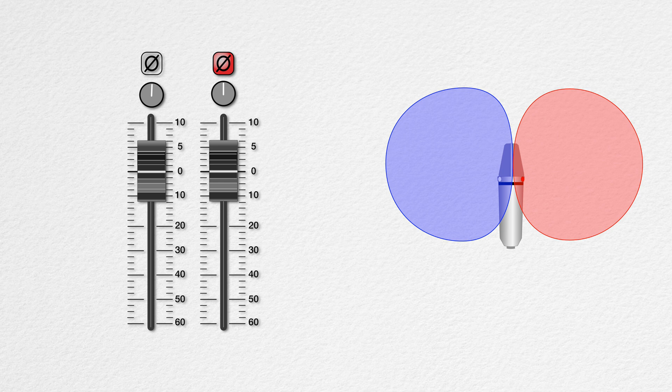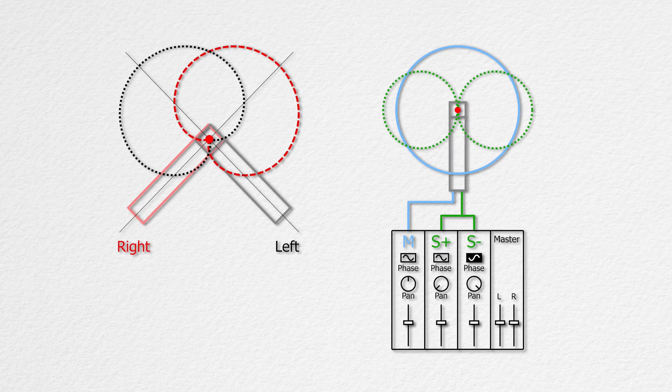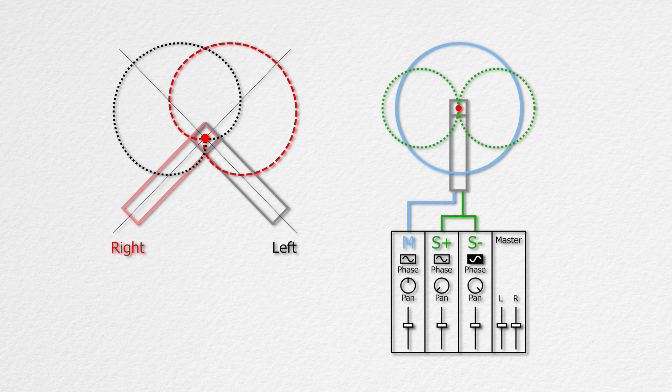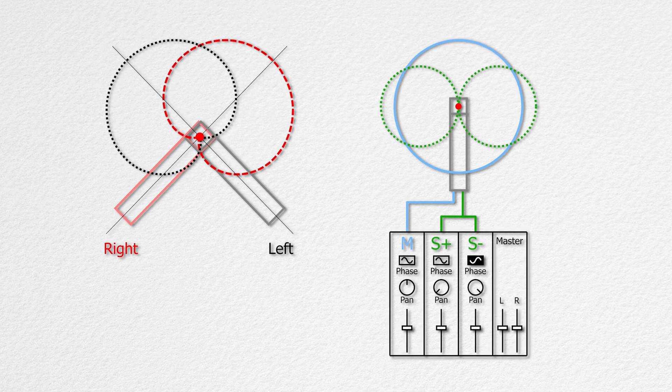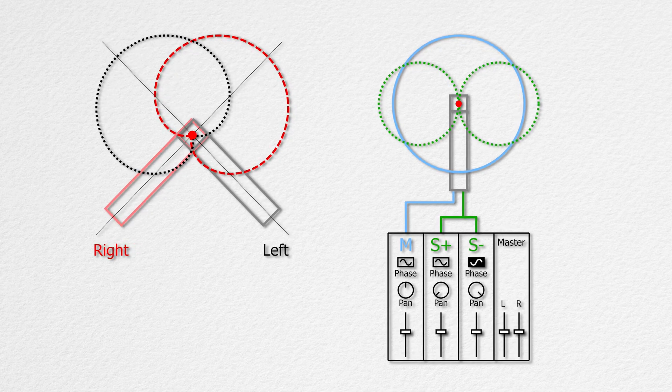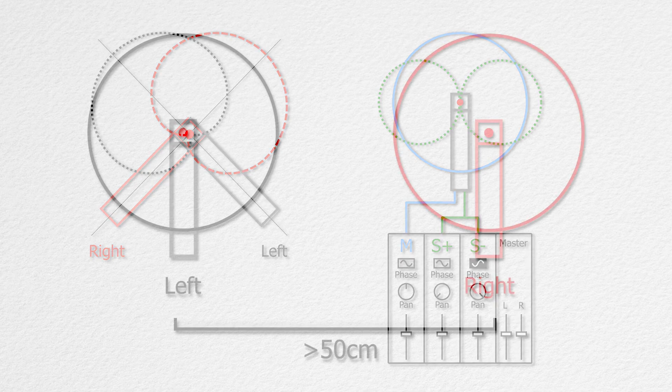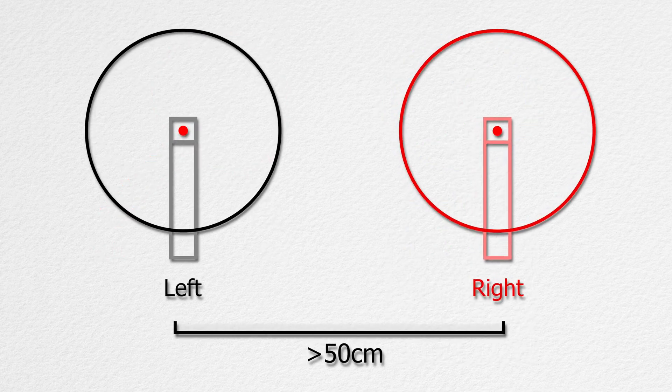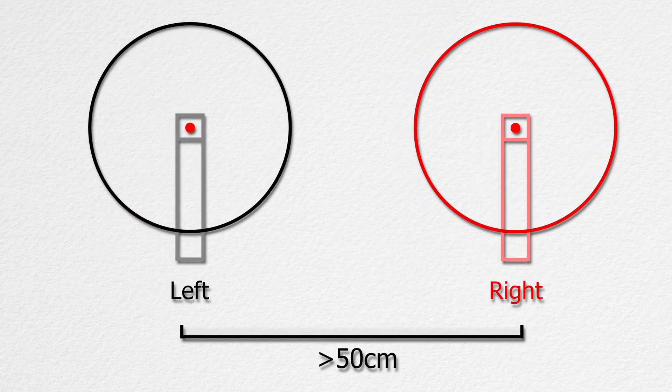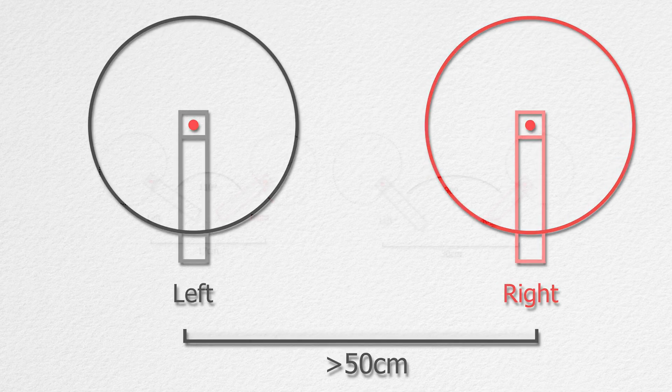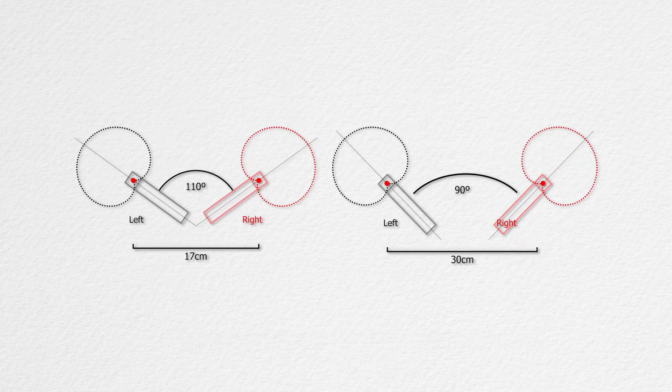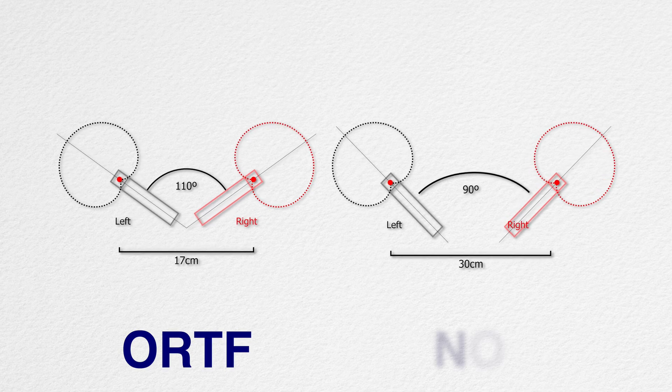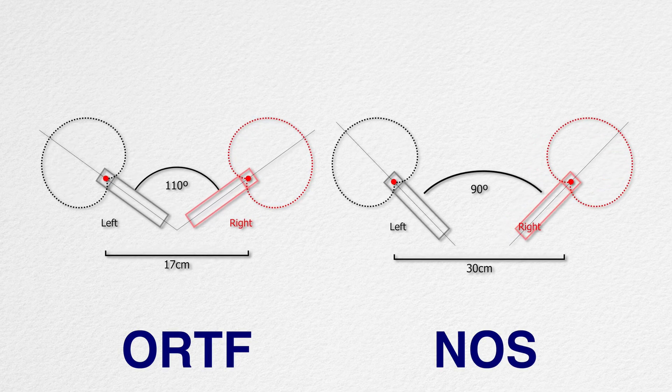Quick review of stereo mic techniques. First, coincident arrays like XY, Blumlein, which we'll see are actually the same thing but use different mic patterns, and mid-side or MS. Then we have space pairs, which are just two microphones spaced 50 centimeters or further apart from each other. Finally, near-coincident arrays such as ORTF, NOS, and similar setups. These are actually my favorite.